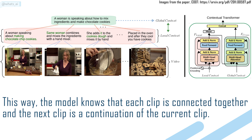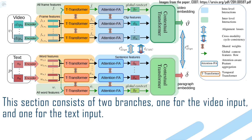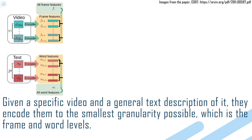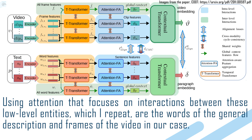This way, the model knows that each clip is connected together and the next clip is a continuation of the current clip. In this example, the model understands that it's still the same person in the whole video doing the same thing with multiple steps, which is a chocolate cookie recipe. This section consists of two branches: one for the video input and one for the text input. Given a specific video and a general text description of it, they encode them to the smallest granularity possible, which is frame and word levels. These encoded inputs are then sent to the temporal transformers and attention feature aggregation module to obtain clip-level and sentence-level features from the frames and words information, using attention that focuses on interactions between these low-level entities — the words of the general description and frames of the video.